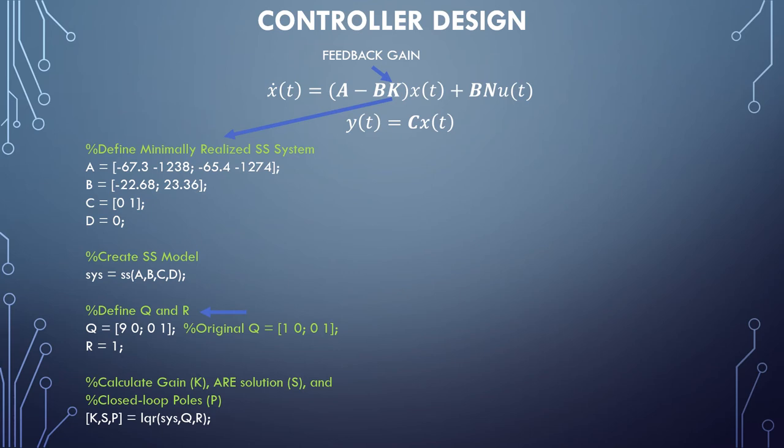The reason it is easier to adjust than Ackermann's is because the diagonal values of the Q matrix correspond directly to applying weights to the states of the system and the R corresponds to the control effort. Overall, it's just a more intuitive way of adjusting the feedback to obtain the desired response.